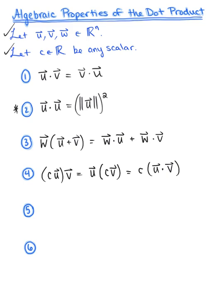Property number five: if we take the dot product of some vector v with the zero vector, we get zero every time. Note it's not equal to the zero vector because the dot product produces a scalar-valued result. And last but not least, property number six: if vector v dotted with itself equals zero, then vector v must be equal to the zero vector.